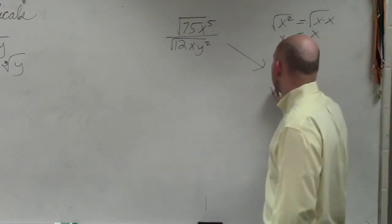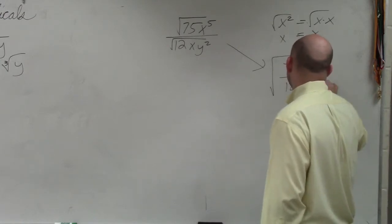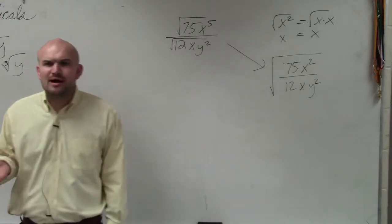I can literally just rewrite this as 75x squared divided by 12xy squared. Now, why would this be way helpful?